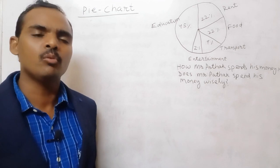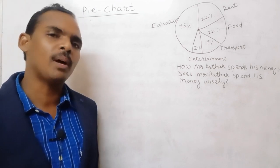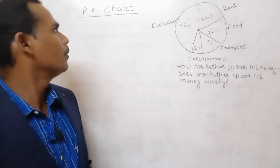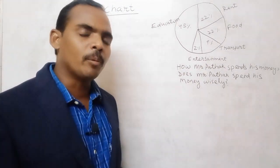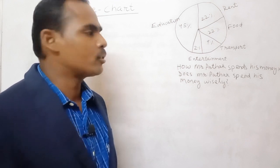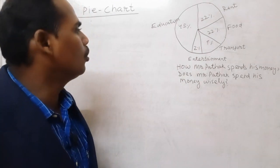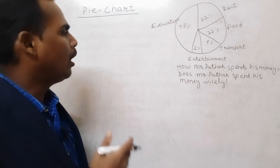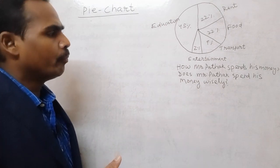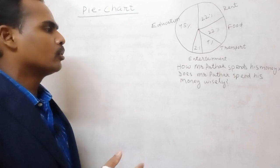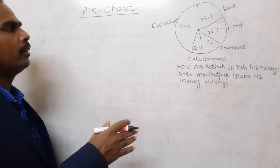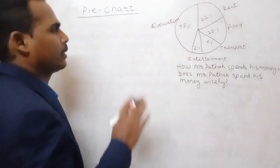You need to write the information in 70 words — it may be 65, 75, or 80, there is no problem. We have to mention how Mr. Pathak spends his monthly salary across the following heads.